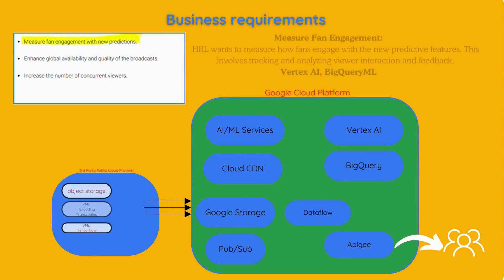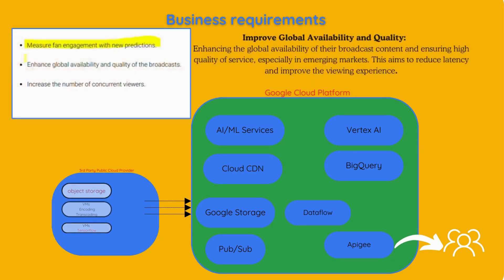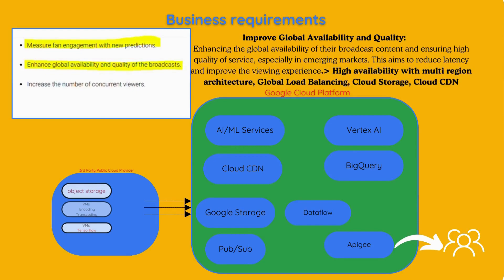HRL also wants to measure fan engagement with new predictions, tracking and analyzing viewer interaction and feedback. To enhance global availability and quality of broadcasts — especially in emerging markets — this can be achieved with a multi-regional architecture, global load balancing, Cloud Storage, and Cloud CDN, aiming to reduce latency and improve the viewing experience.